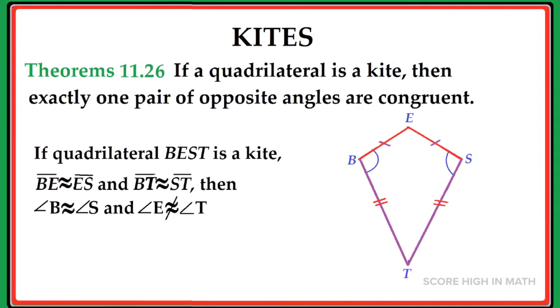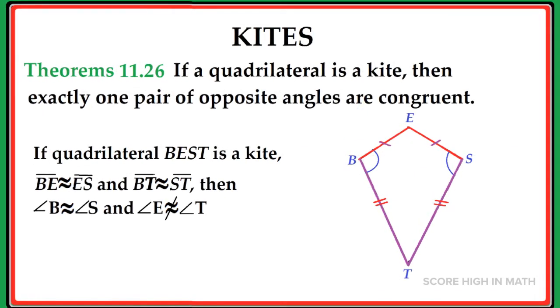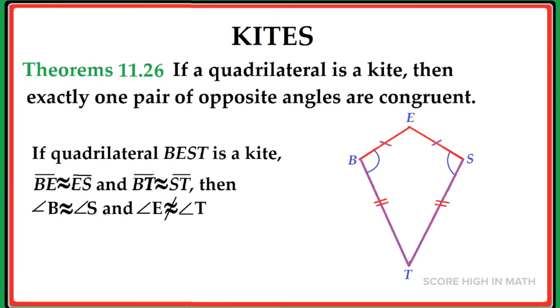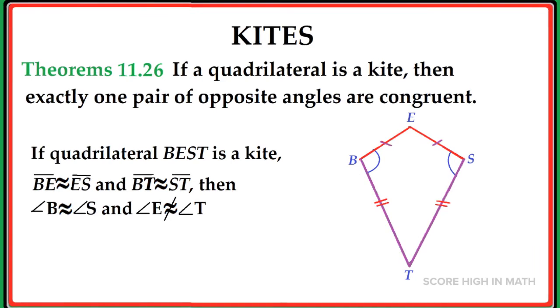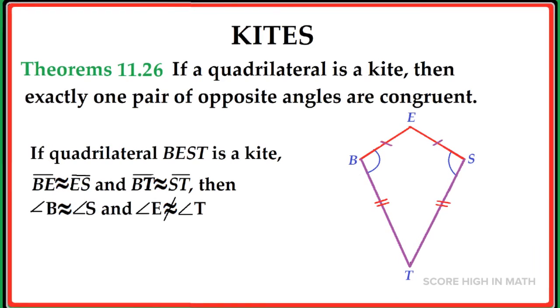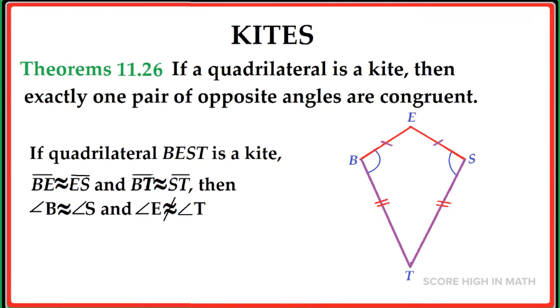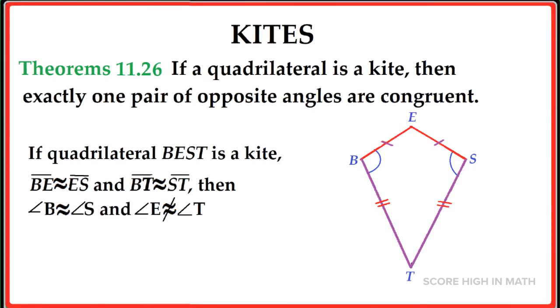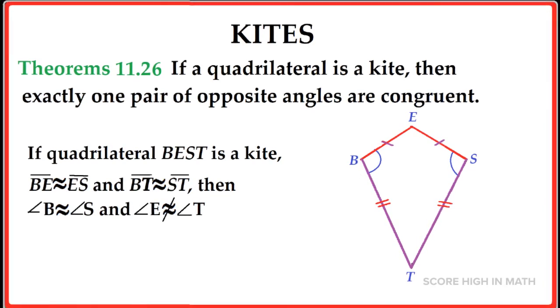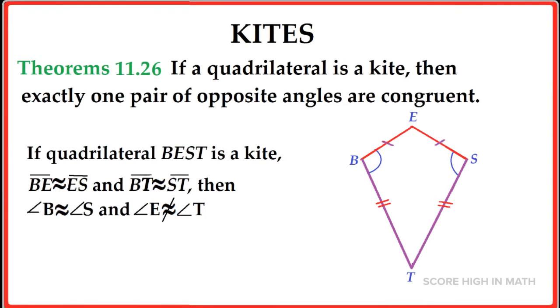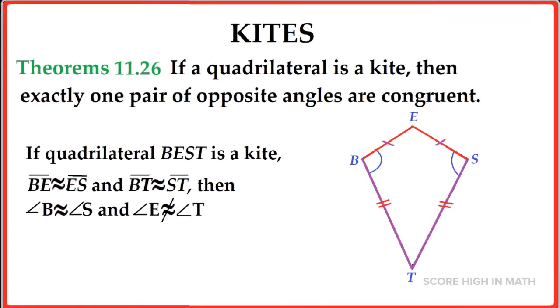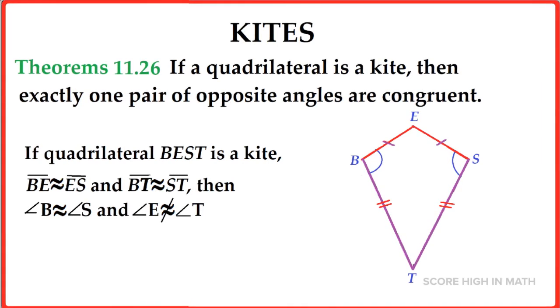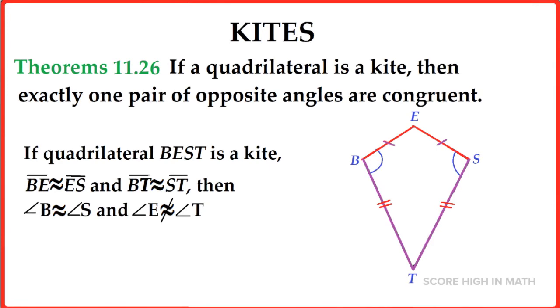And in Theorem 11.26, if a quadrilateral is a kite, then exactly one pair of opposite angles are congruent. Therefore, line segment BE is congruent to line segment ES and line segment BT is congruent to line segment ST. Therefore, the measure of angle B is congruent to the measure of angle S, but the measure of angle E is not congruent to the measure of angle T.